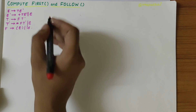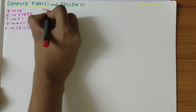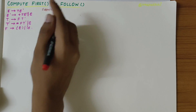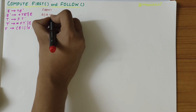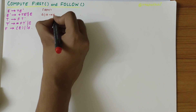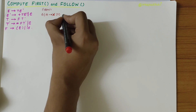In this video we'll be looking into computing FIRST and FOLLOW of a given grammar. Before finding FIRST and FOLLOW, we should write the rules. Let's compute FIRST first. Rule one says that if the production is of the form A derives X where X is a terminal, then first of A is equal to X.